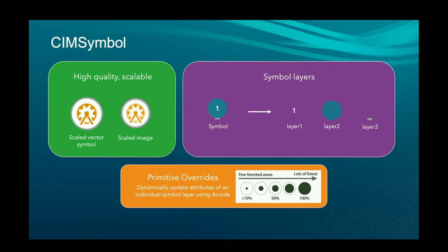You can get a lot more complicated with the CIM symbol. There are two key things: it gives you a very high-quality, scalable vector symbol — unlike images that can get blurry — and you have full control over the symbology model, defining your own symbol layers in the pro-symbology model. You can also vary properties of various primitives on those symbols with primitive overrides, so you can vary a property based on a data value. For example, you can have two symbol layers — an outer ring and an inner dot — where the inner dot is data-driven but the rest isn't.